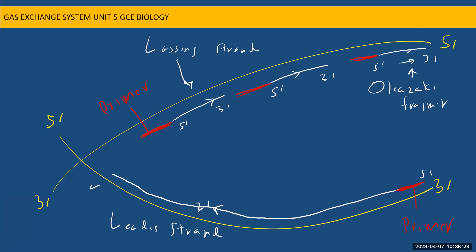We are coming to the last stage now. In the last stage, we're going to learn how the lagging strand fragments join together, and how the primer is removed. The primer should be removed at the end. We don't want the primer to stay in this DNA molecule because it's an RNA sequence. The primer should be removed and these fragments should join together. We're going to talk about the lagging strand and how it makes the final version. The leading strand has no issue — it only needs to remove the primer.